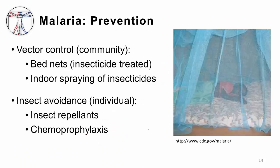Malaria prevention. There are two strategies for control. On a global, larger-scale sense, things that are used in communities are bed nets that tend to be insecticide-treated, as you can see in this picture of the young boy under a permethrin-treated bed net. Also, doing indoor spraying of insecticides has been shown to be effective. On an individual level, a lot of people will use insect repellents like DEET on their skin or permethrin on their clothing. The mainstay in the U.S. if you're going to a malaria endemic region is chemoprophylaxis — you may have taken medications like mefloquine, atovaquone, proguanil, or doxycycline, which are commonly given for prophylaxis to prevent malaria infection.